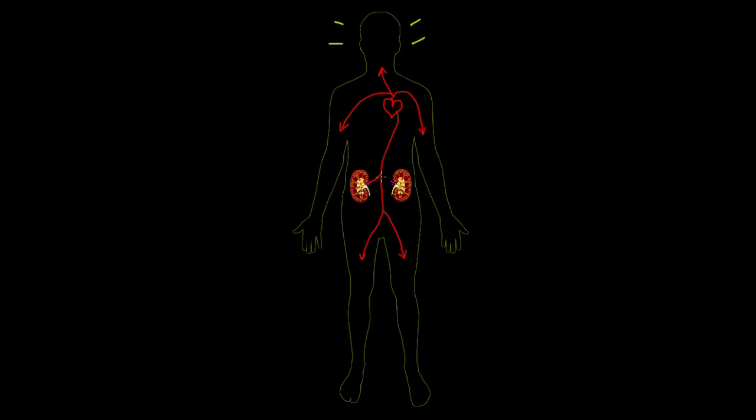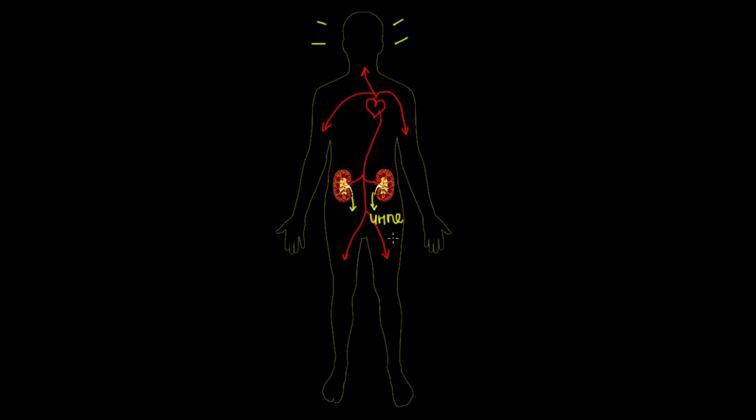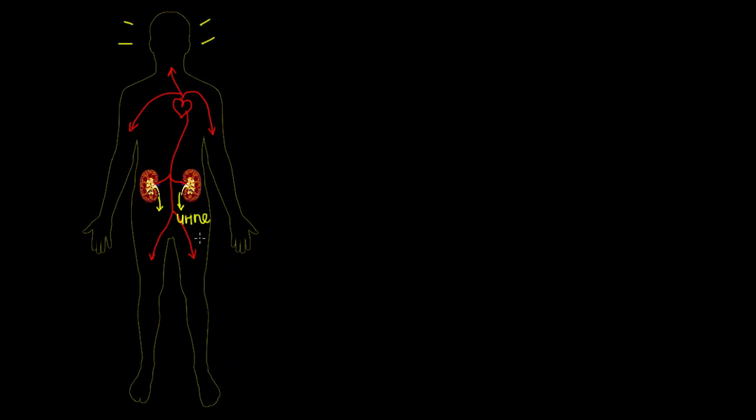Both of your kidneys then are going to filter the blood and release urine, which is just a collection of waste products that your body wants to get rid of, and the urine's gonna hang out in your bladder that sits about right here until it's an appropriate time to go to the bathroom. And that's kind of a broad overview, but let's go into a little more detail about what the kidneys do.